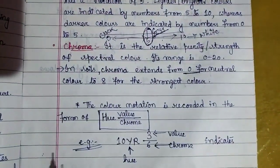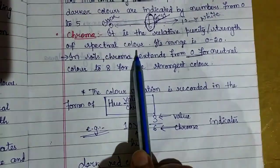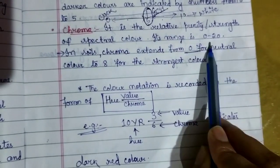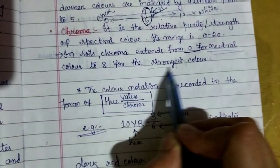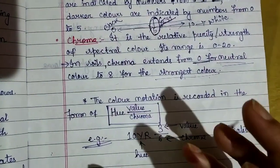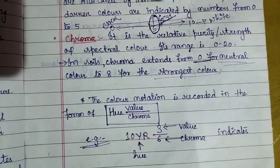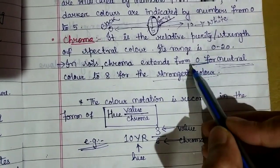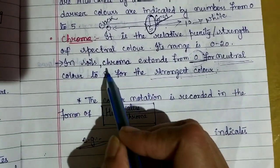Coming to the last parameter, chroma. It is the relative purity or strength of the spectral color. It ranges from 0 to 20, while value ranges from 0 to 10. In soil, chroma extends from 0 for neutral colors to 8 for strongest color. Chroma gives us the idea whether the color is dull or bright or strong. For neutral colors like white or gray, it is 0. For strongest or brightest colors, it is noted as 8.